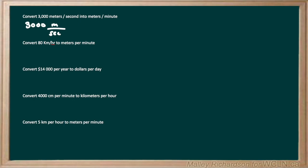As we can see, the meters are going to stay the same and we just need to convert seconds to minutes. To do this we're going to multiply by a ratio of seconds to minutes. We know there are 60 seconds in one minute, so we multiply by 60 seconds per one minute. These seconds cancel out and we're just left with meters per minute. So we get 3,000 times 60, which gives us 180,000 meters per minute.